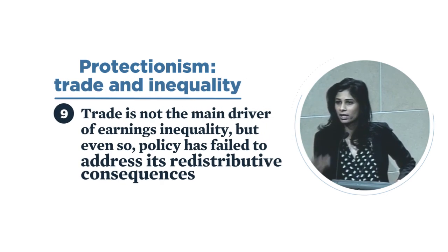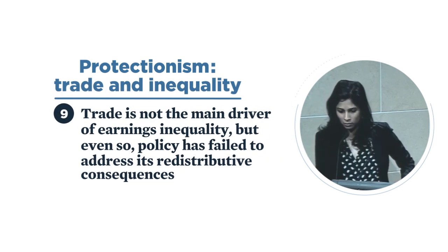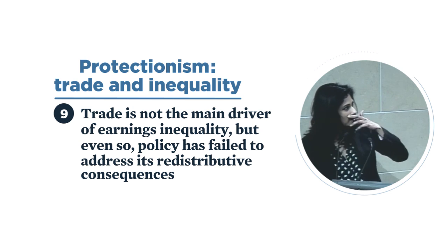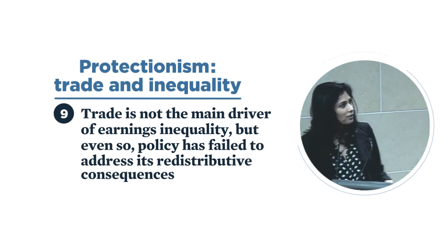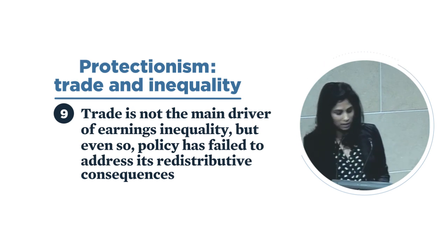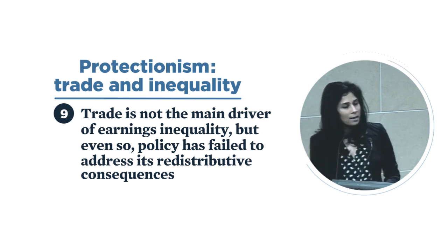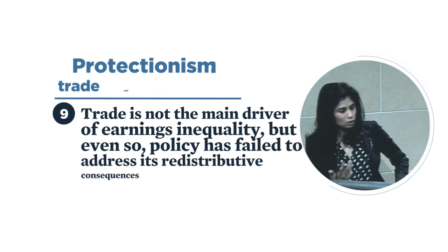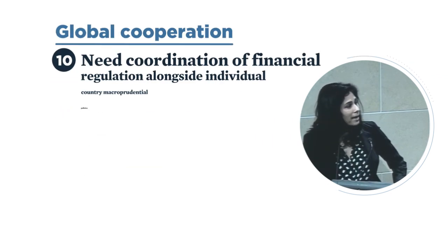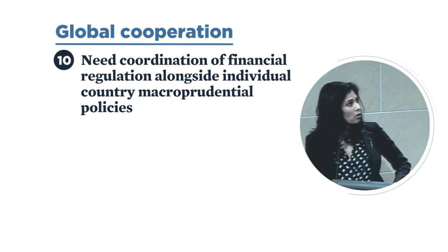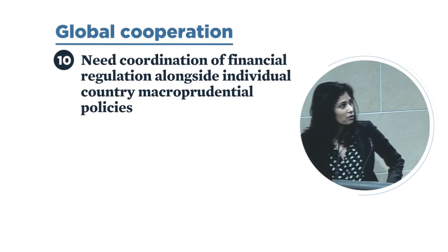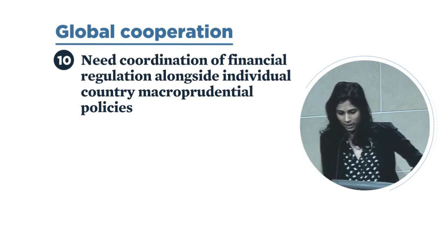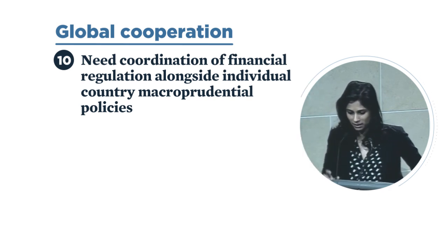When we think about what to do about globalization: academic research says that trade is not the main driver of earnings inequality, but we've done a terrible job with redistribution. Global coordination of financial regulation is required alongside individual country macro-prudential policies — that's quite obvious because when you have global banks, individual countries don't internalize the effects of their decisions on the rest of the world.